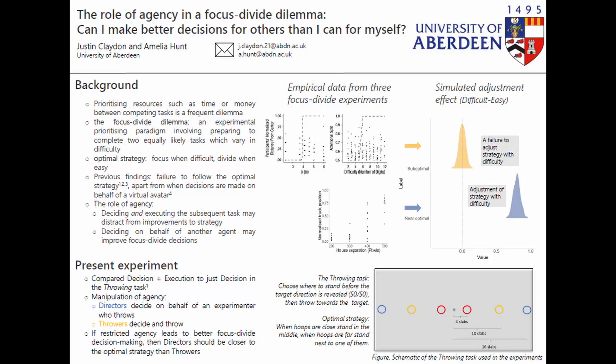The role of agency in a focus divide dilemma. Can I make better decisions for others than I can for myself? Deciding how to prioritize resources like time or money between competing tasks is a problem we encounter frequently in daily life. The focus divide dilemma is a choice paradigm we've used to investigate the ability to prioritize.